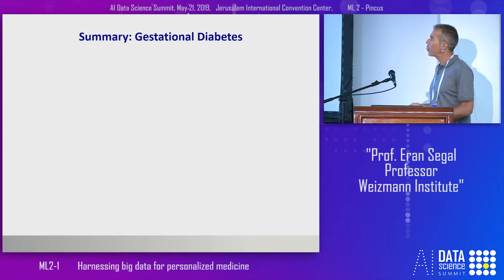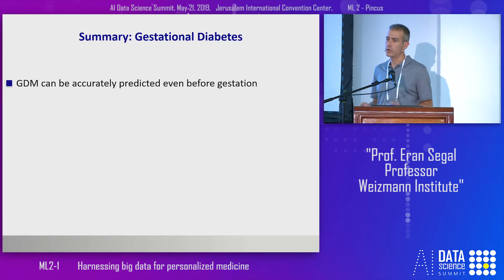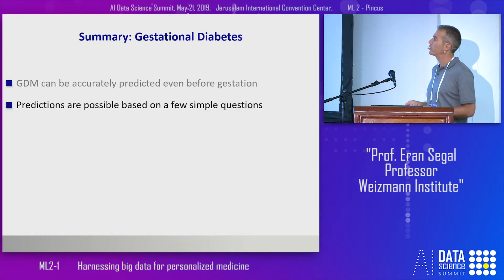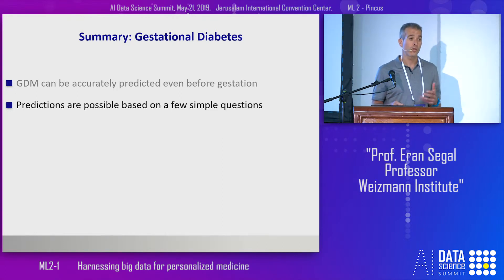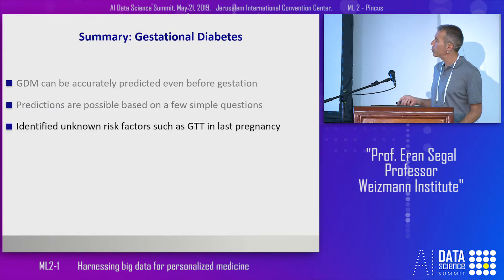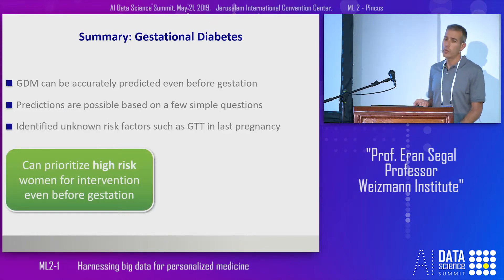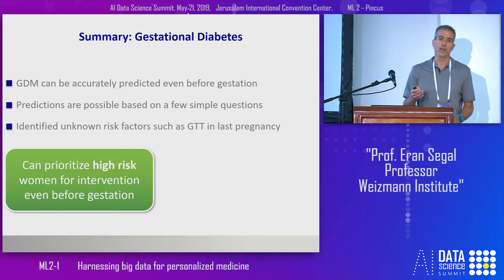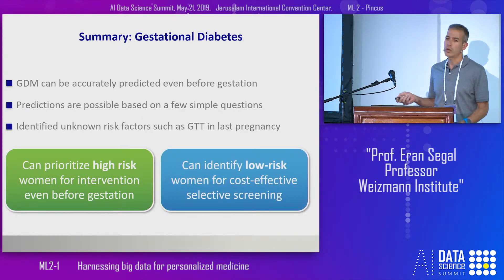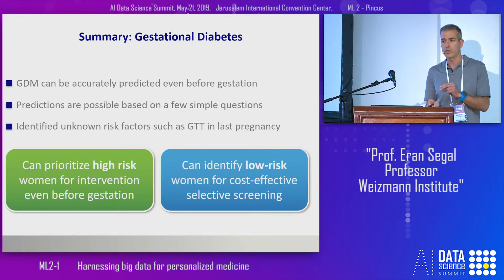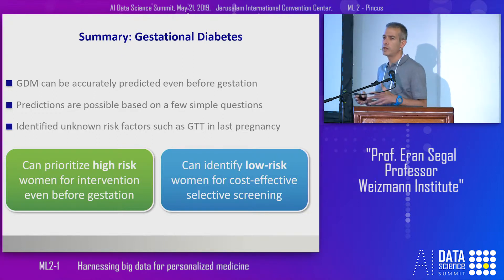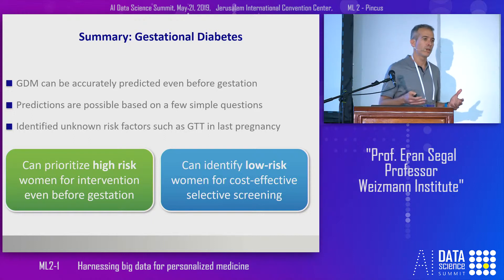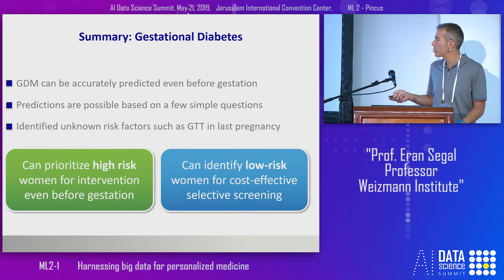To summarize this part: I showed you what is, as far as we know, the first predictor of GDM based on electronic health records that works with very high accuracy. Predictions are possible based just on a simple questionnaire that every woman can answer, and the model also identifies previously unknown factors. We believe this model can be deployed to prioritize high-risk women for interventions even before gestation. The model also identifies women with very low risk, so it can be used to reduce the amount of testing and potentially avoid the GTT itself for about half the population during screening.